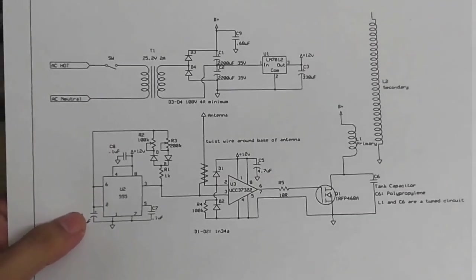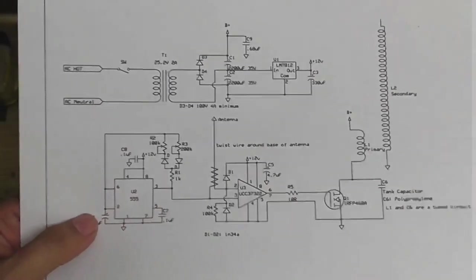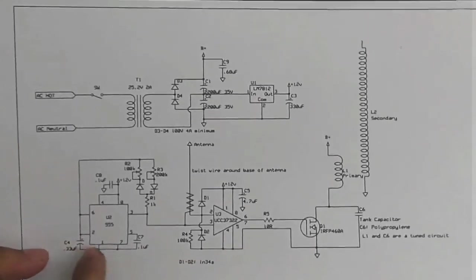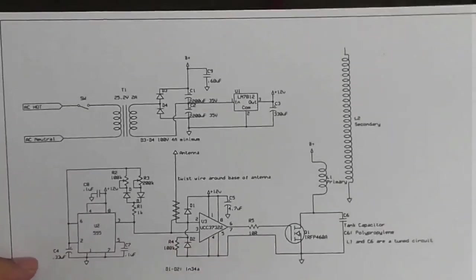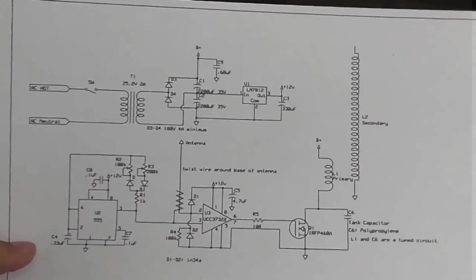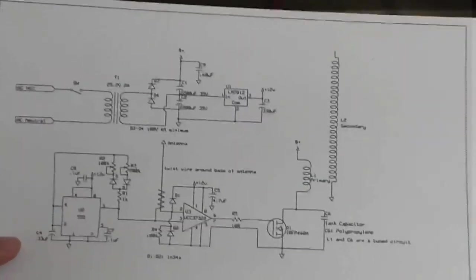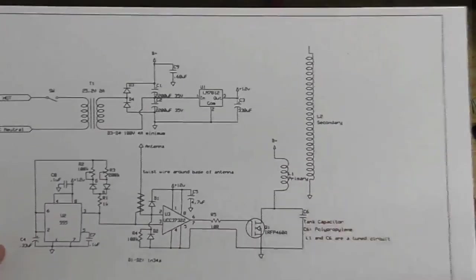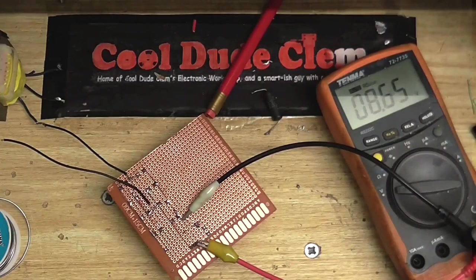So, in the next video we're going to be putting in the triple five timer and the gate driver chip. And then, of course, after that, we've got to do this part and find out what capacitor we need here. That's going to be fun. So yeah, I think we're good.